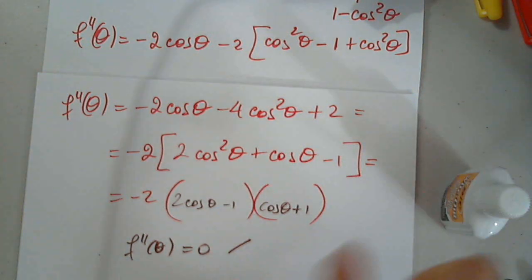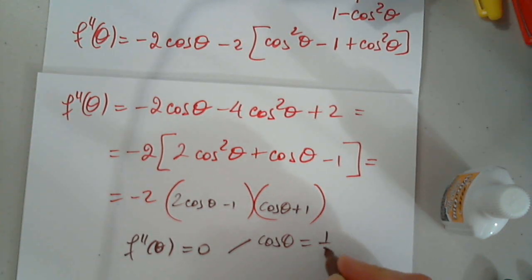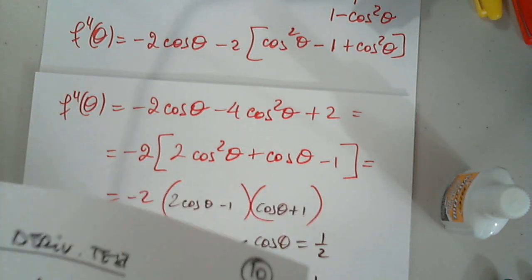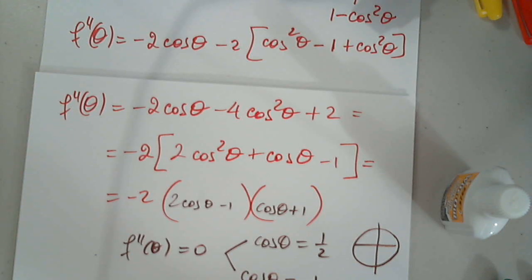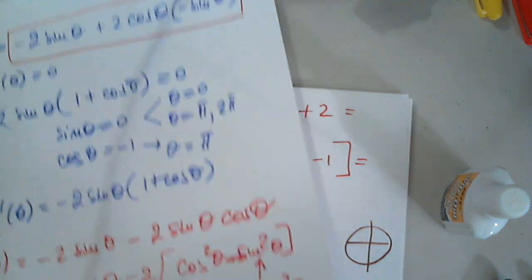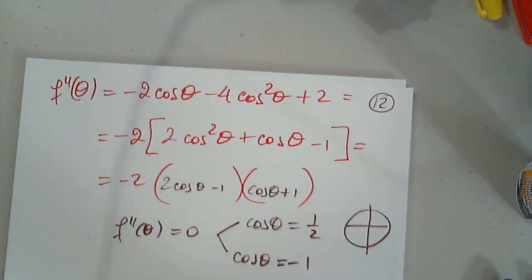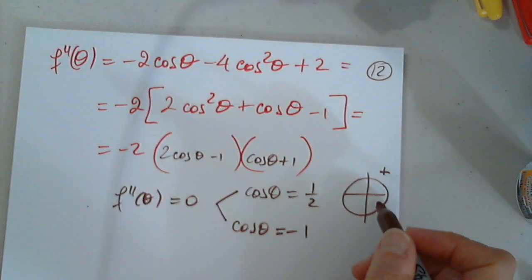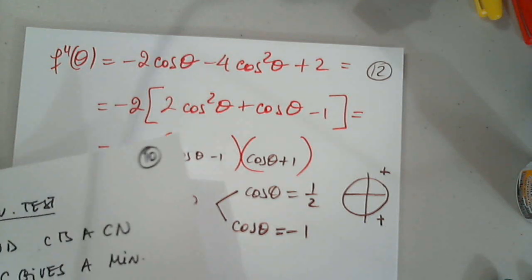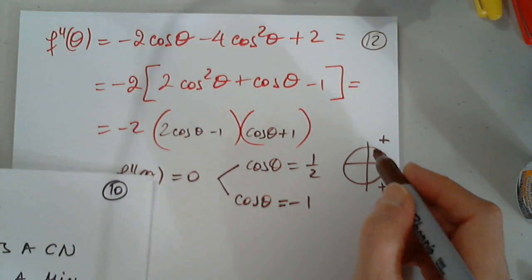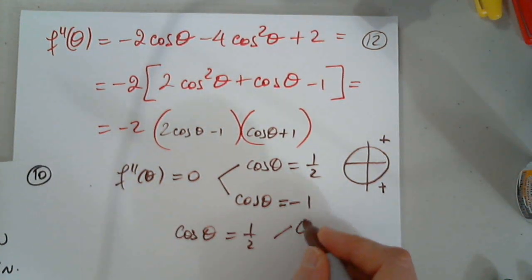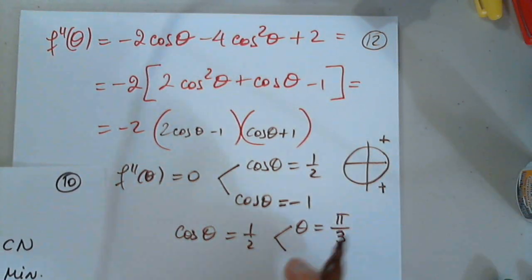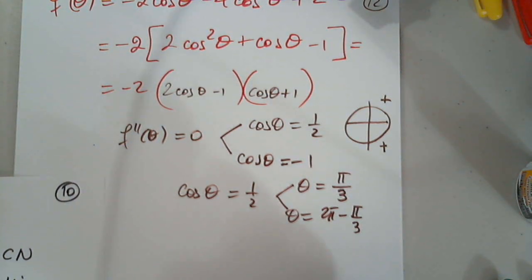So we have negative two times two cosine theta minus one times cosine theta plus one. That gives cosine theta equals one half and cosine theta equals negative one. Where is cosine one half on the unit circle? First and fourth quadrants. So cosine theta equals one half means theta equals pi over three, and the other one is two pi minus pi over three, which is five pi over three.